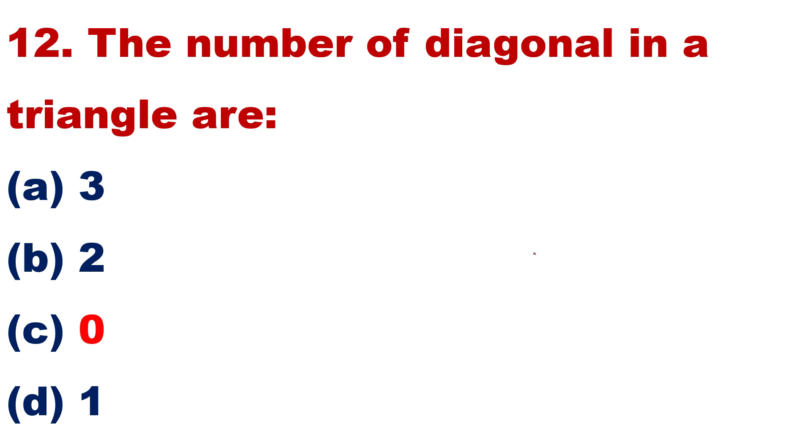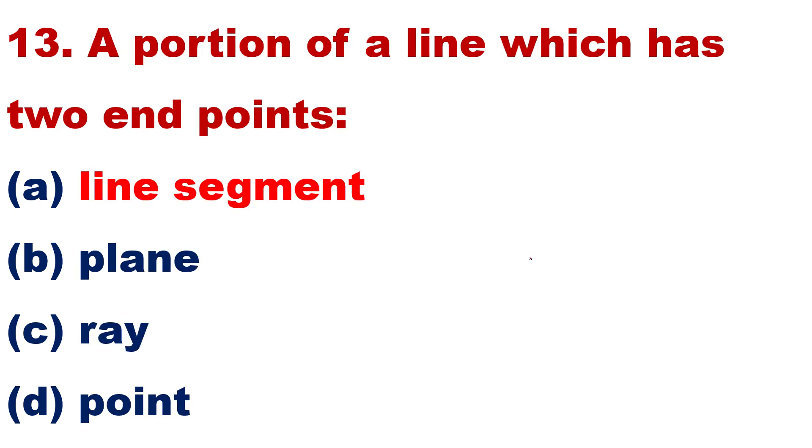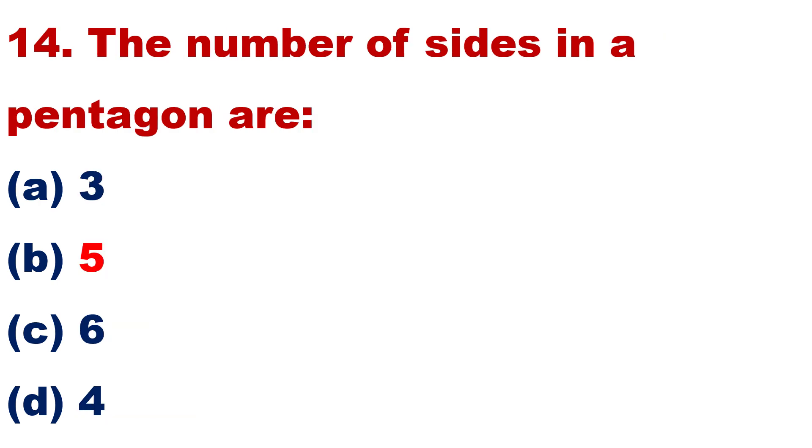A portion of a line which has 2 end points: line segment, plane, ray, point. Write your answer on your copy, in the comment box. Question number 14: The number of sides in a pentagon are. Pentagon sides, I know triangle sides are 3, quadrilateral sides are 4.